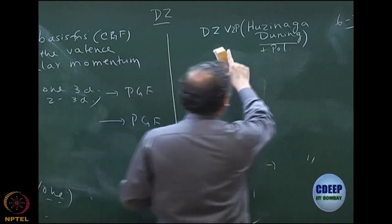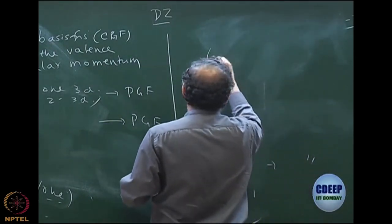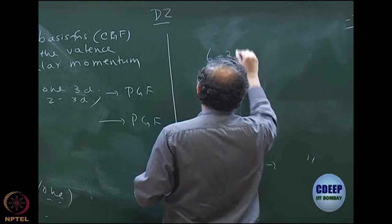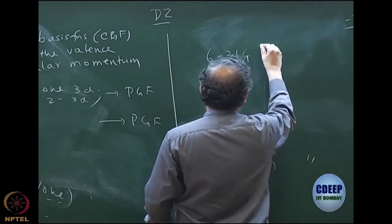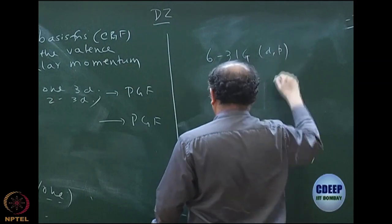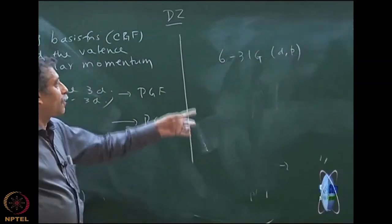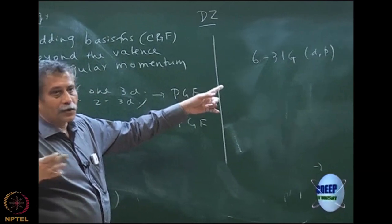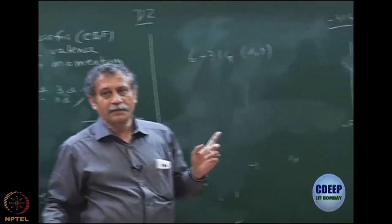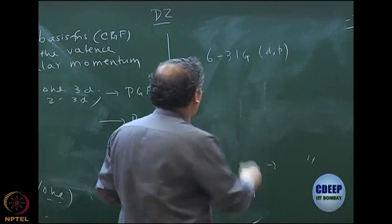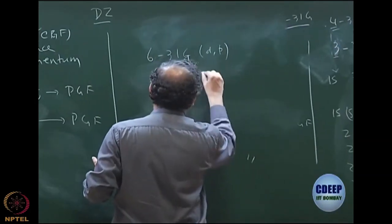In the case of Pople's basis sets, they call it 6-31G(d,p). D and P are very clear: for carbon — first-row atom — D; for hydrogen, P. This is very often also called 6-31G** — many different nomenclatures exist.